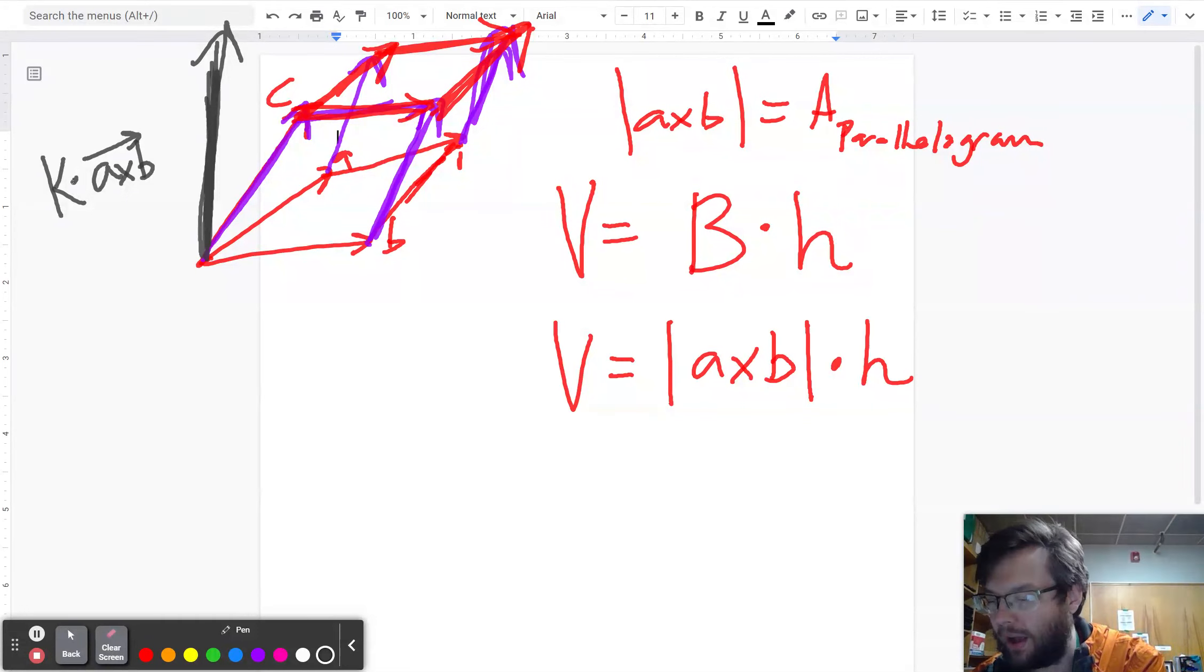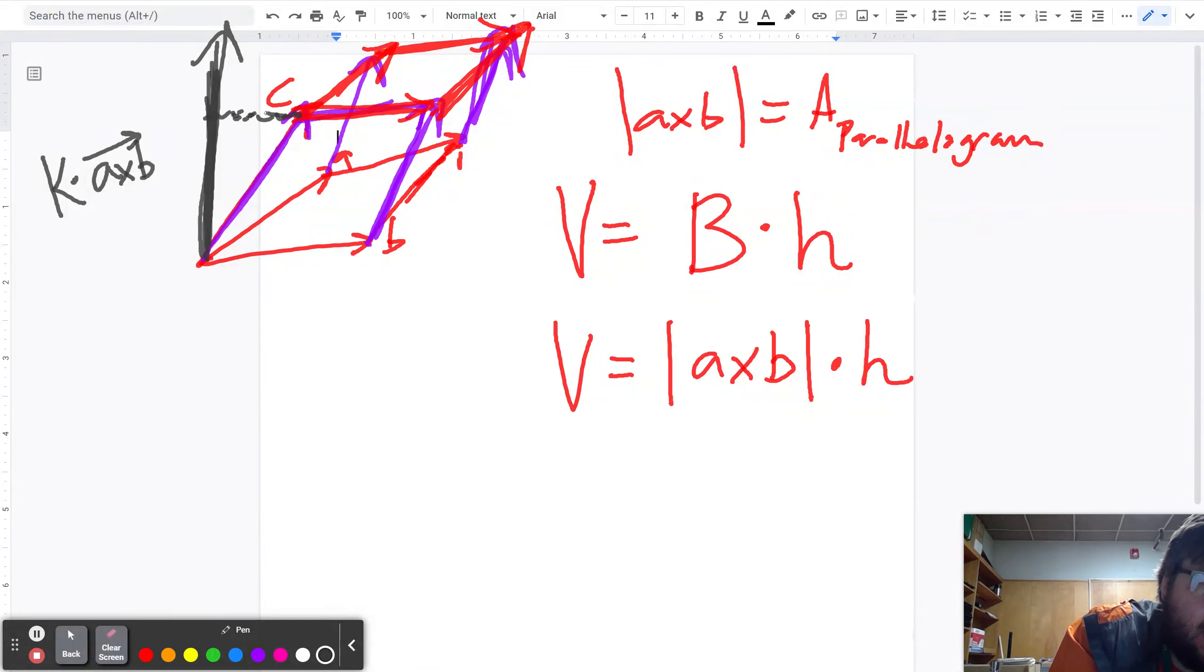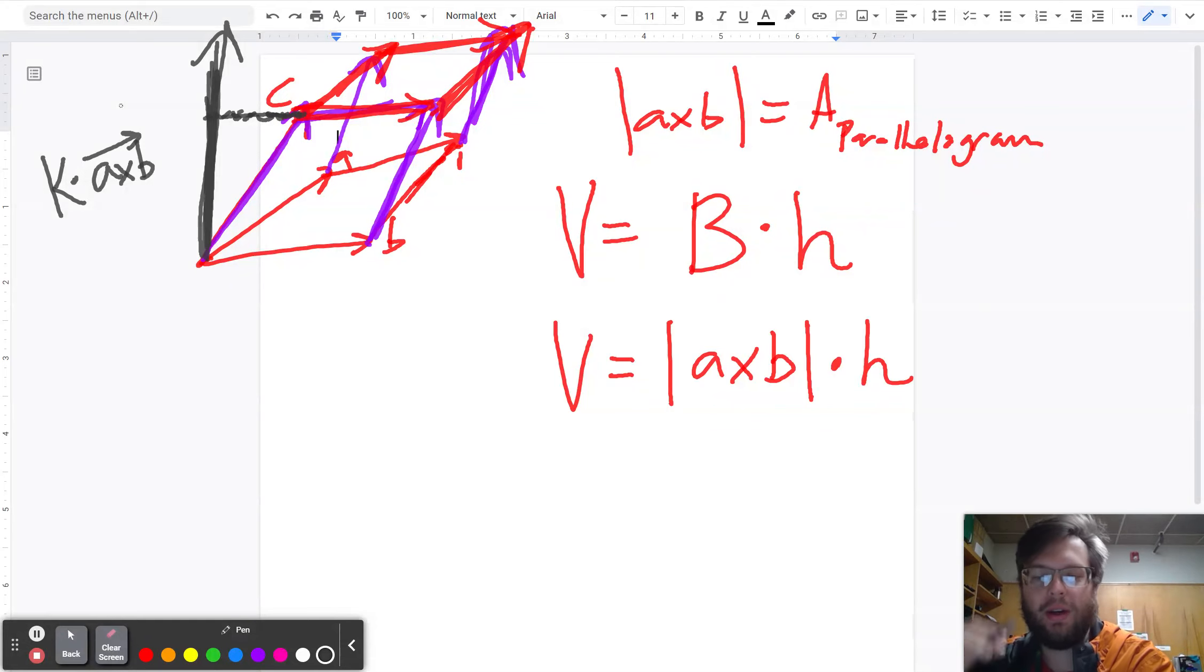But what I care about is I care about the cross product landing right here at the same height of C. So what I want to do is I want to find out how much of the cross product do I have to go up to land exactly on the height of C.